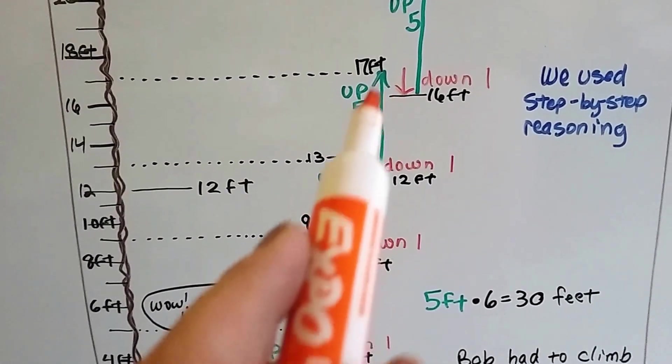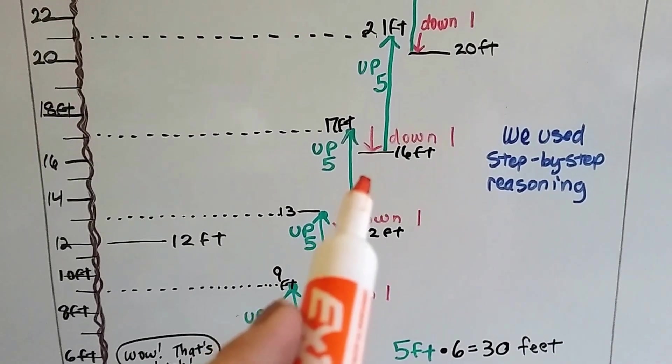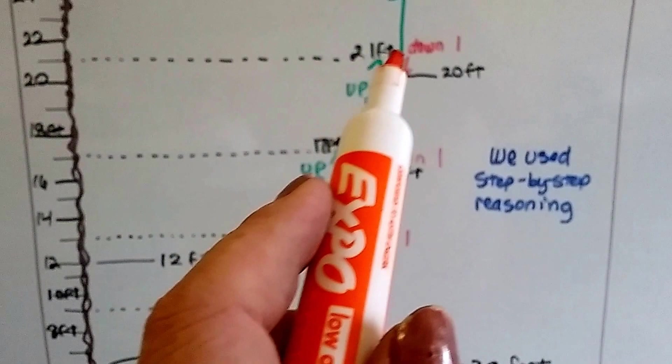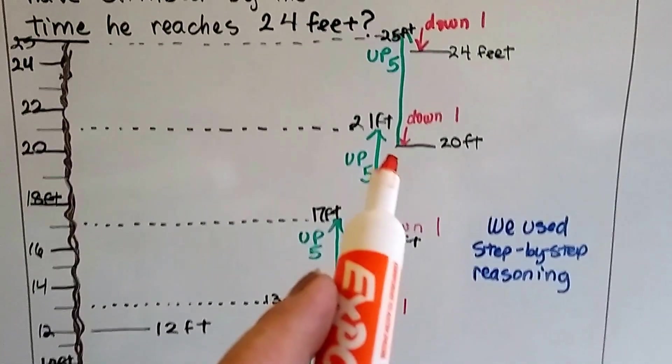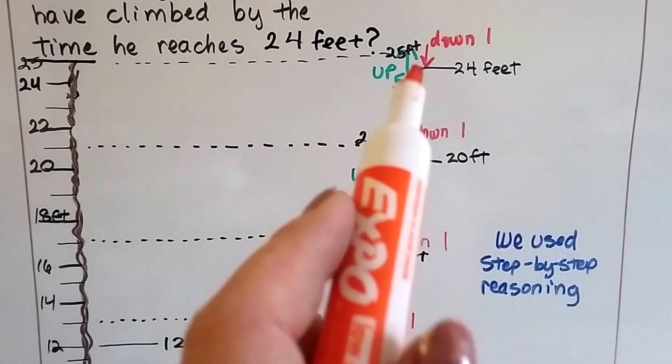Then he climbed five feet. Twelve plus five is seventeen, but he slid down one. So now he's at sixteen. Then he climbed up five feet. Sixteen plus five is twenty-one. But then he slipped back down one, so now he's at twenty. Then he climbed up five feet more and slipped down, and now he's at twenty-four feet.